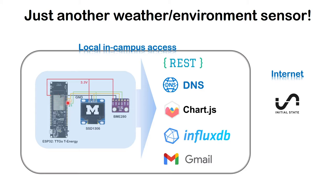The board has PSRAM, so I store a bunch of historical data on the PSRAM that can be rendered directly to Chart.js — meaning I can look at historical data directly on the microcontroller. We also send this data to an InfluxDB server inside the campus, and the ESP32 can send emails using the local Gmail service on campus.